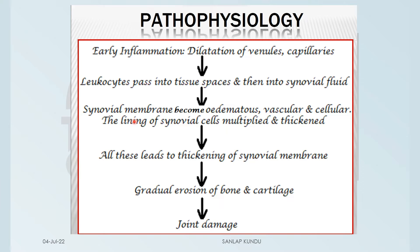There will be early inflammation, which causes dilation of the venules and capillaries, then leukocytes pass into tissue spaces and then into synovial fluid. The synovial membrane now becomes edematous, vascular, and cellular. The lining of synovial cells multiplies and thickens, all of this leading to thickening of the synovial membrane.